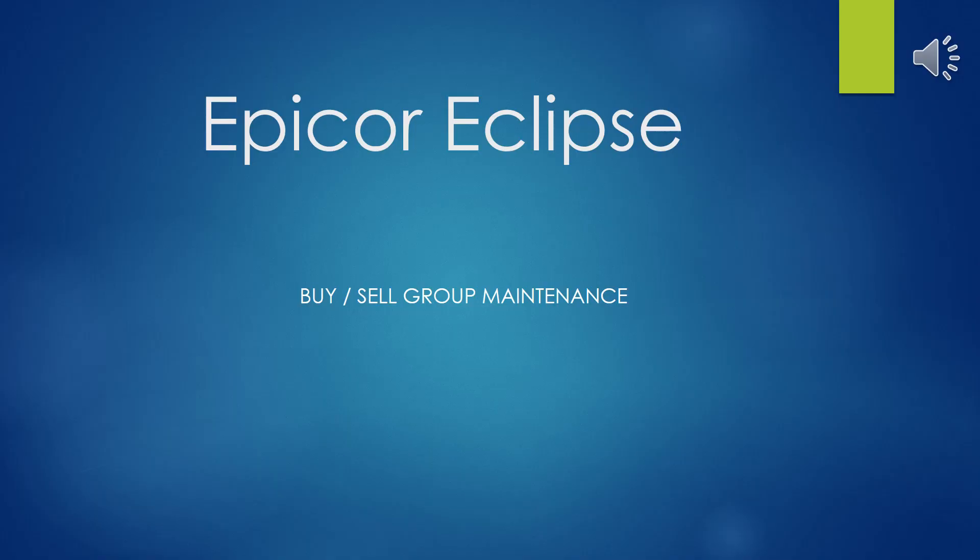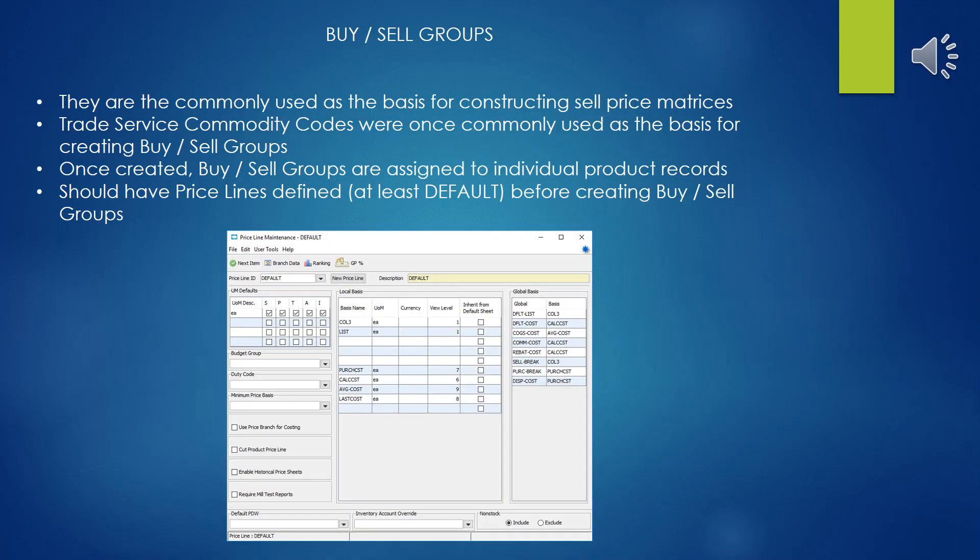Greetings. This presentation covers Epicor Eclipse Buy and Sell Group Maintenance. Although Eclipse allows you to construct price matrices using a variety of different bases, the Buy and Sell Groups is probably the most common method for constructing a price matrix.